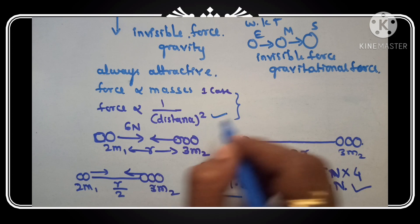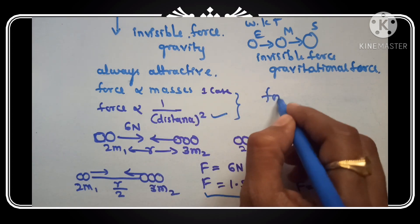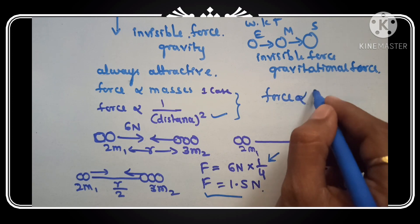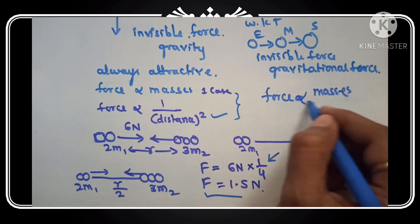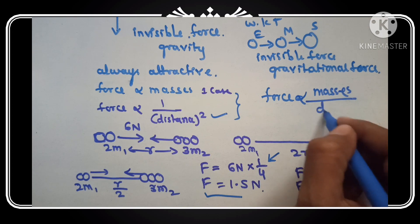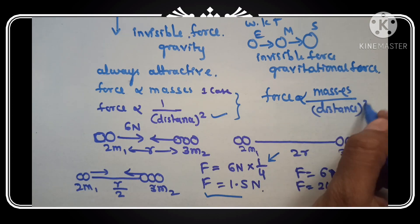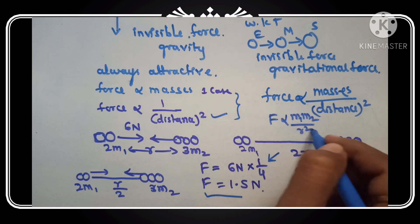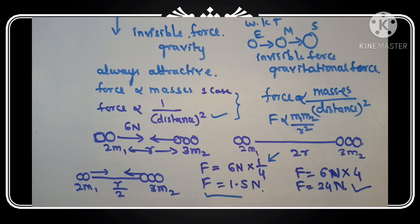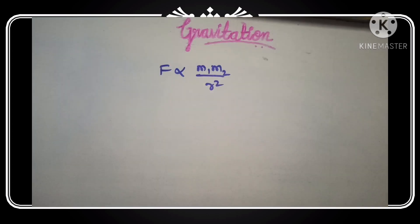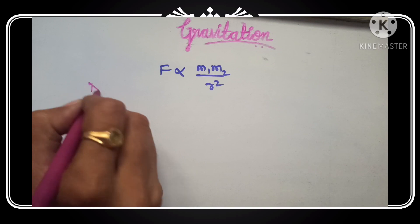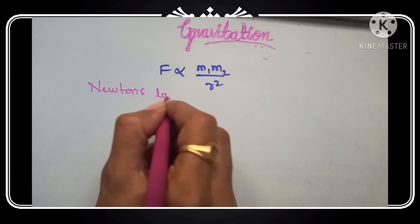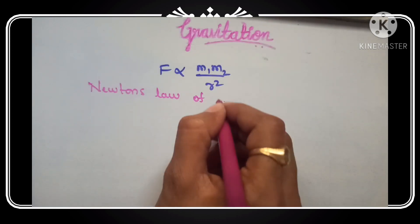These are the two cases. By combining these two cases, we get that the force is proportional to masses divided by distance squared — that is, F is directly proportional to M1 M2 and inversely proportional to the square of the distance between the two particles. This equation is Newton's law of gravitation.